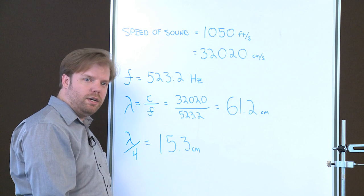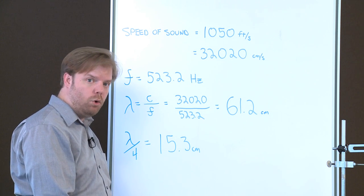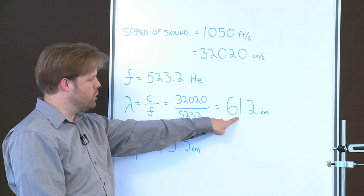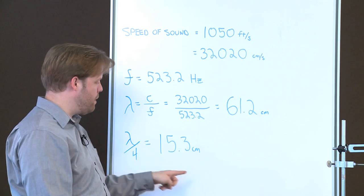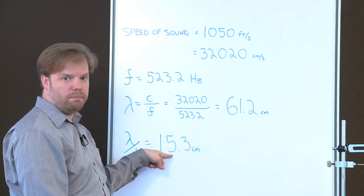Now the depth we need to dial in on the tube is going to be one-fourth of that wavelength. So we take our 61.2 centimeter wavelength, divide that by four, and we get 15.3 centimeters.